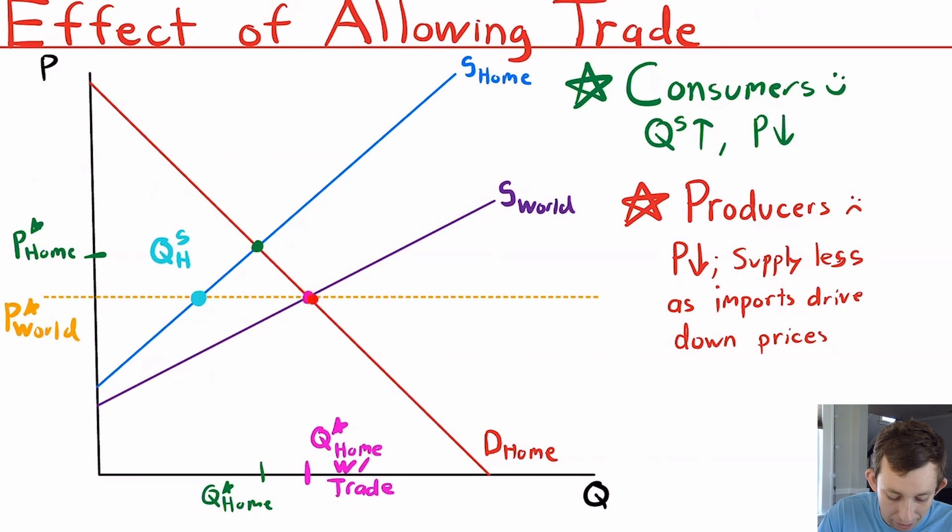So what's going to happen is we're going to move to this new p star world. There's going to be some given price of donuts that prevails everywhere in all towns. And so now that we're trading on this cross-town market, we have to accept that price as given, because our donut suppliers in our town are not really big enough to control the price. They just have to take the price from all these other towns as given.